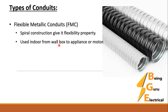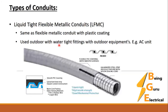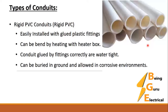Liquid-Tight Flexible Metallic Conduit, or LFMC, is the same as flexible metallic conduit but with a plastic coating. It is used outdoors with water-tight fittings and outdoor equipment such as AC units. Rigid PVC conduit is easily installed with glued plastic fittings. It is used inside concrete or walls, can be bent by heating with a heater box, and can be buried in the ground and used in corrosive environments.